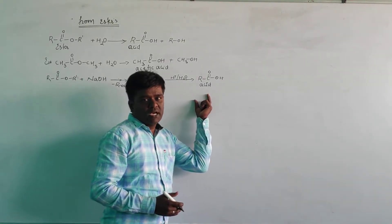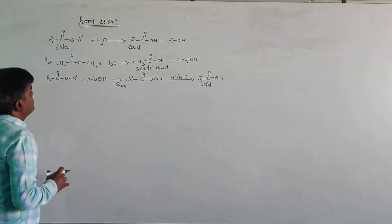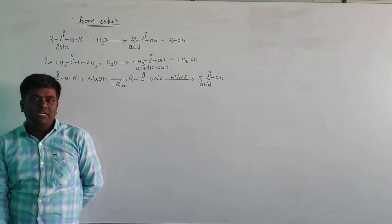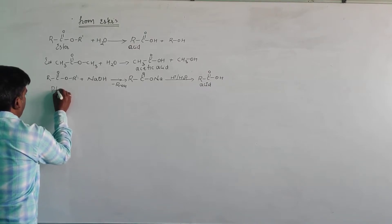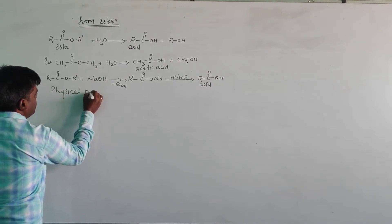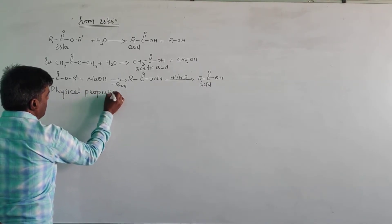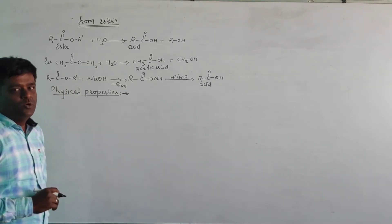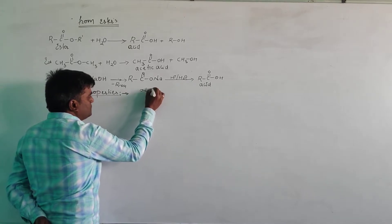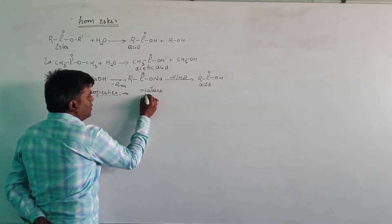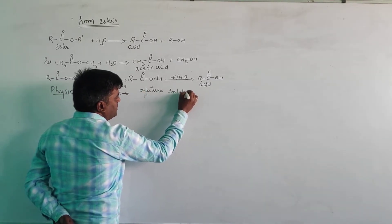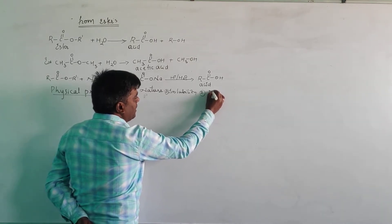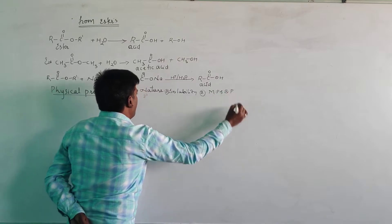The carboxylic acid formed is acetic acid. That is about the methods of preparation for carboxylic acid. Next, we will see the physical properties of carboxylic acid. The physical properties we will consider are: first, nature; second, solubility; and third, melting point and boiling point.